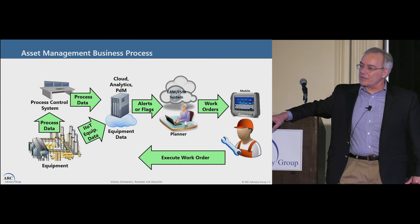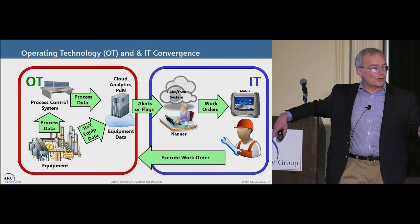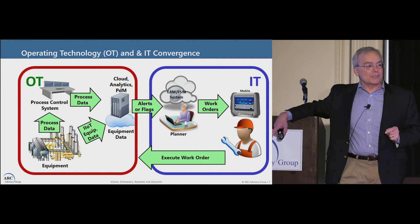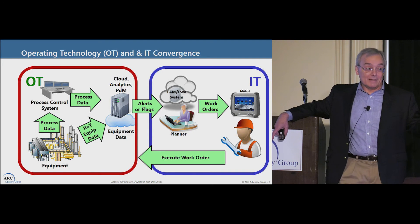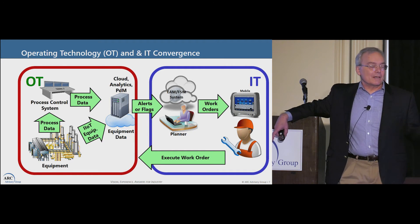All of us control engineers love closed-loop processes. Now a lot of people talk about OT-IT integration, and sometimes they don't drill in and define it. I just want to point out that this is a clear example of the integration of operating technology and IT. Obviously the operating technology here is the process control system. The alerts and flags are the thing in between that integrates it with the IT systems. Your EAM — enterprise asset management — gives us a clear example of the OT-IT integration that's going on.